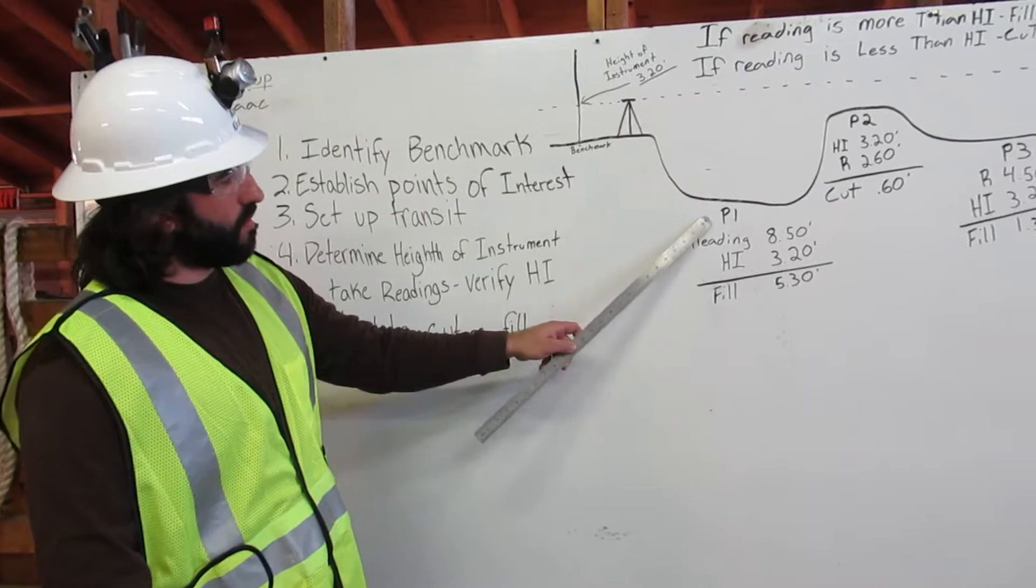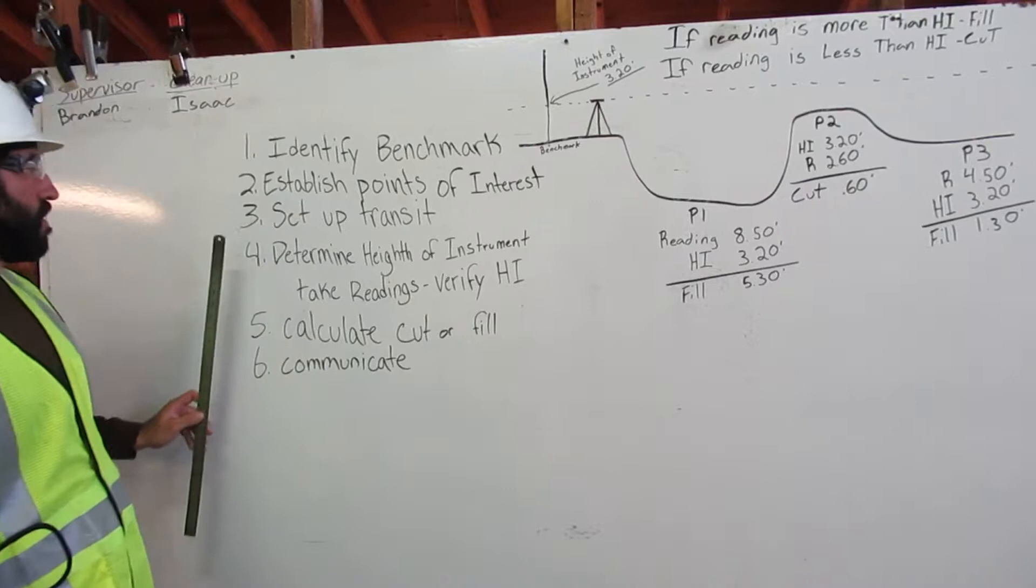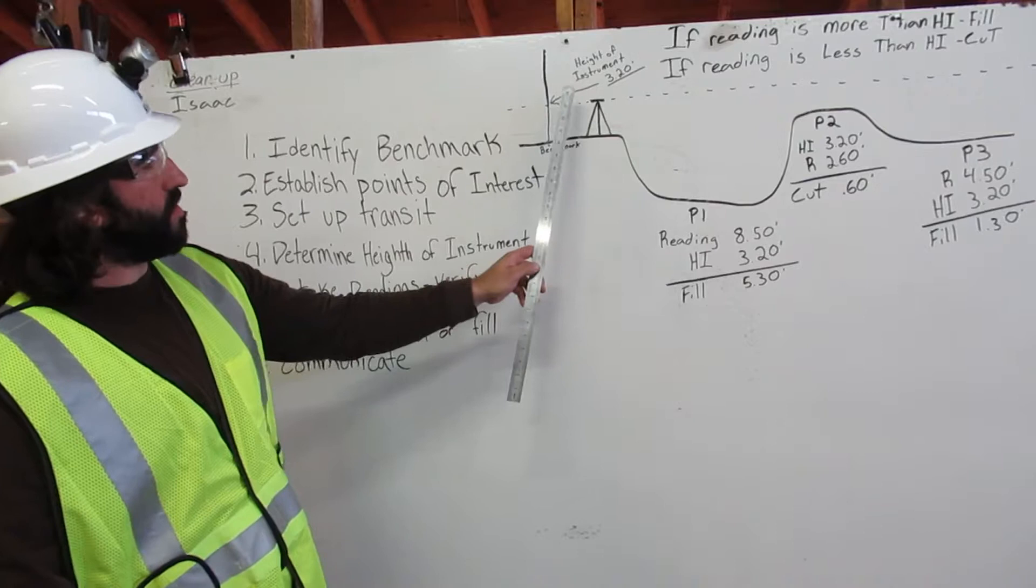Two, we are going to establish points of interest. Here our points of interest are point one, point two, and point three. Three, we are going to set up our transit. Our transit is here and it is set up to level.